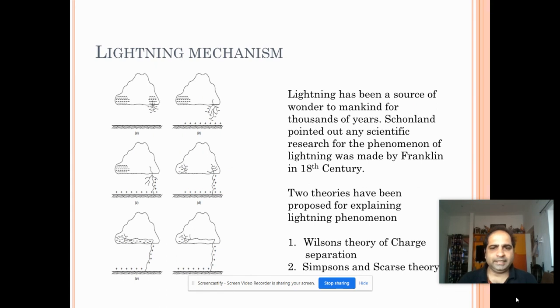So what is lightning? Lightning has been a source of wonder to mankind for thousands of years. Sconland pointed out any scientific research for the phenomenon of lightning was made by Franklin in the 18th century. Two theories have been proposed to explain the lightning mechanism: one is the Wilson's theory of charge separation and the second one is Simpson's and Scar's theory. We will go through the two theories in the next session. Thank you.